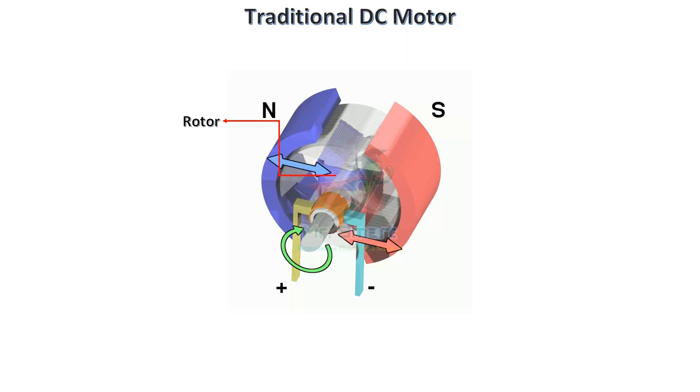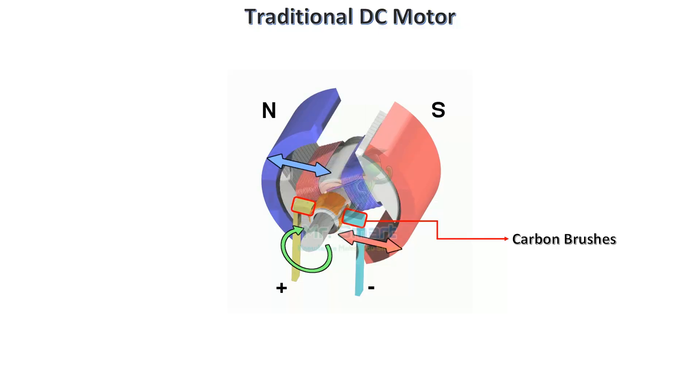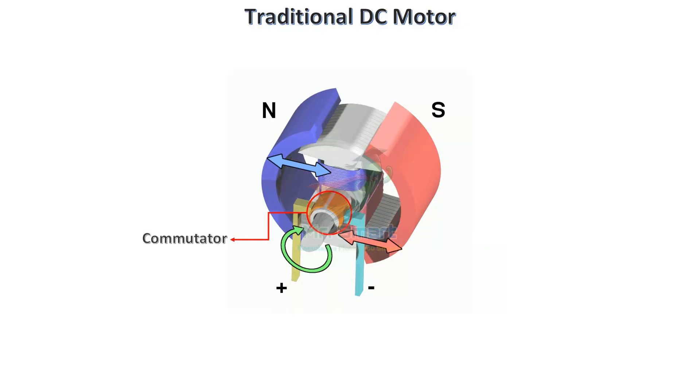The current transfer is done with the help of mechanical parts like carbon brushes that transfer current to the commutator. The commutator reverses current flow in the armature. The brushes and commutator create friction and wear out over time, making the motor less efficient and requiring maintenance.